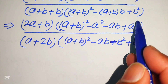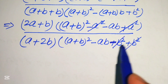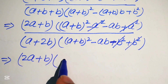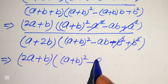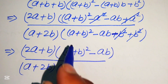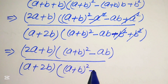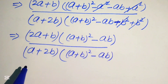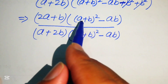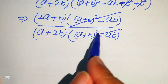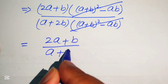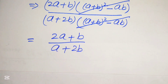Focusing on the bracket terms: in both numerator and denominator, the positive and negative terms cancel each other out. We are left with (a plus b) squared minus ab in both brackets. Since these bracket expressions are identical, they cancel completely, leaving us with (2a plus b) divided by (a plus 2b).